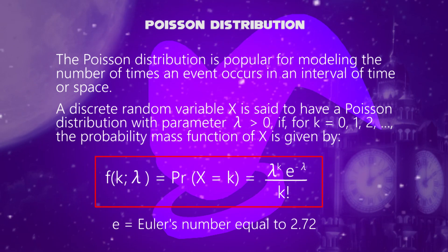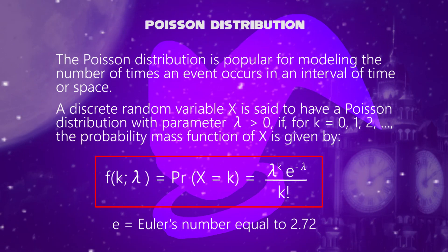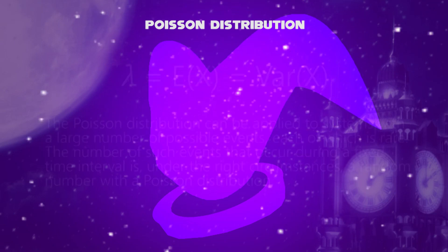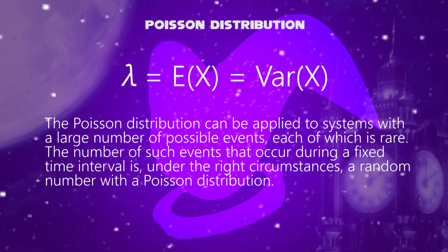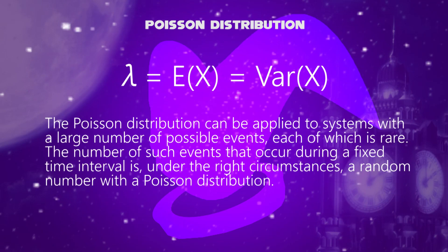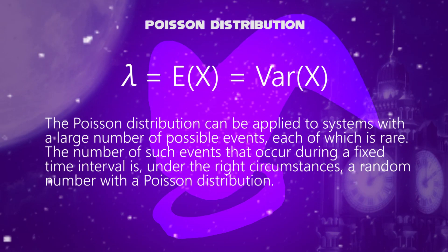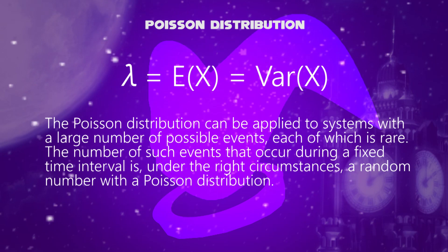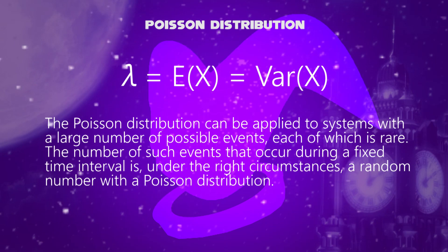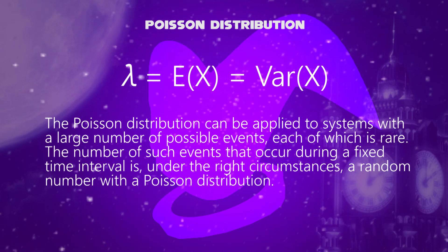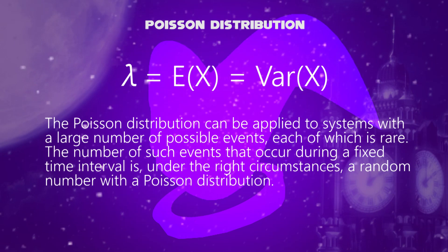Here, e represents Euler's number equal to 2.72. The positive real number lambda is equal to the expected value of x and also to its variance. This can be applied to systems with a large number of possible events, each of which is rare.